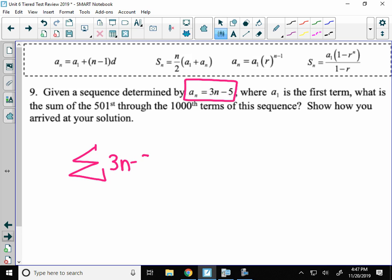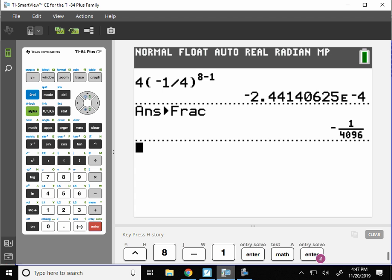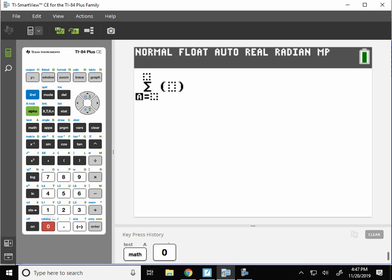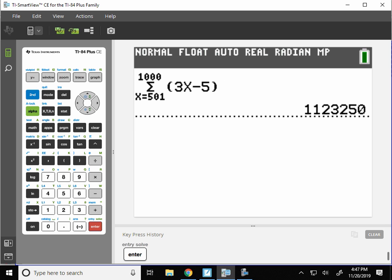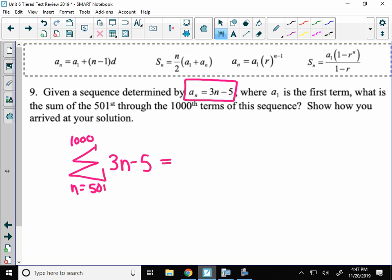My suggestion is you take sigma here. You throw that a_n formula after the sigma. And you know you are adding up from the 501st term to the 1,000th term. And then you pop that guy into your calculator and you get an answer. All right, so we're going from term 501 to term 1,000. And then my equation is 3x minus 5. And there's your sum.